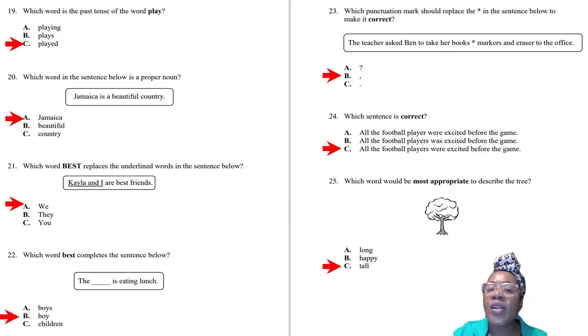Question twenty-three: Which punctuation mark should replace the asterisk to make it correct? The sentence says 'The teacher asked Ben to take her books, markers, and eraser to the office.' She's listing items, so the answer is a comma to separate them. Question twenty-four: Which sentence is correct? Subject-verb agreement again. The answer is C.